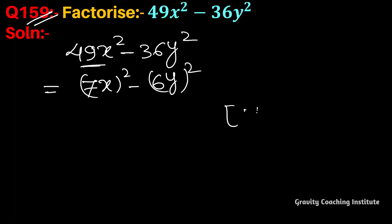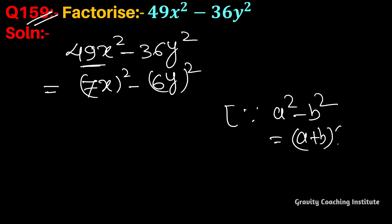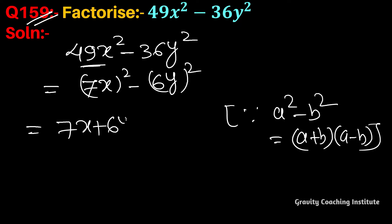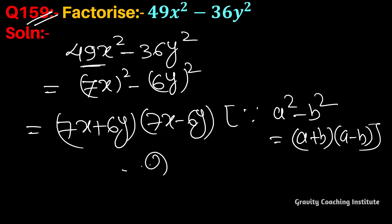Now we use the identity a² minus b² equals (a + b)(a − b). Applying this, the expression becomes (7x + 6y)(7x − 6y), which is the required answer.